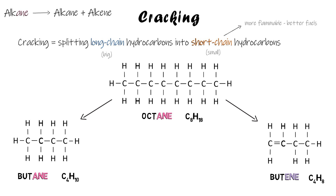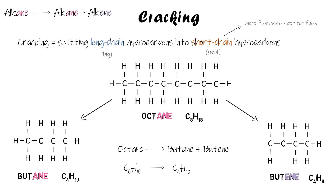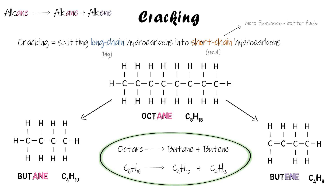Notice we're taking octane and producing butane and butene — we're taking an alkane and producing one alkane and one alkene. Cracking always follows this process: a long-chain alkane is converted into a short-chain alkane and a short-chain alkene. The word equation is octane → butane + butene, and the symbol equation is C8H18 → C4H10 + C4H8.